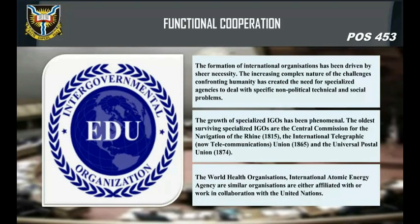The formation of international organizations has also been driven by sheer necessity — functional cooperation. The increasingly complex nature of challenges confronting humanity has created the need for specialized agencies to deal with specific non-political, technical, and social problems. The growth of specialized IGOs has been phenomenal. The oldest surviving specialized IGOs are the Central Commission for the Navigation of the Rhine (1815), the International Telegraphic — now Telecommunications — Union (1865), and the Universal Postal Union (1874). The World Health Organization, International Atomic Energy Agency, and similar organizations are either affiliated with or work in collaboration with the United Nations.